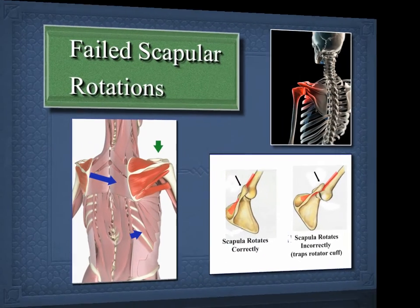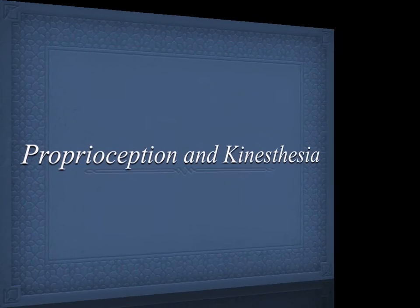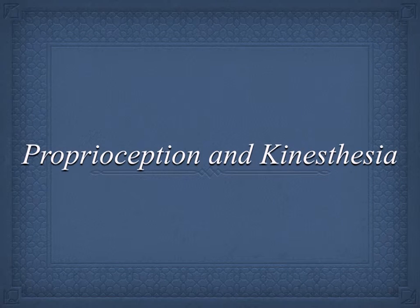Regarding neuromuscular dysfunction — as demonstrated in the bottom right-hand corner of the image — when you fail to properly rotate the scapula, you trap the rotator cuff. People very often use the terms proprioception — knowing where your limbs are in space — and kinesthesia — knowing your movement in space — interchangeably.